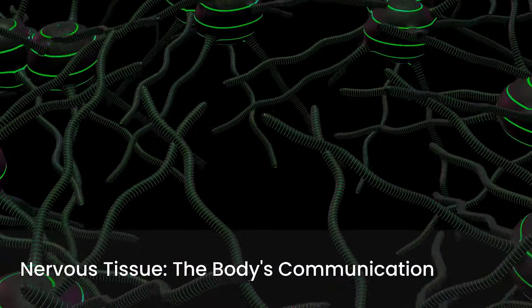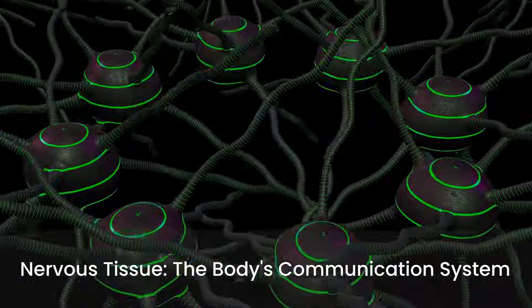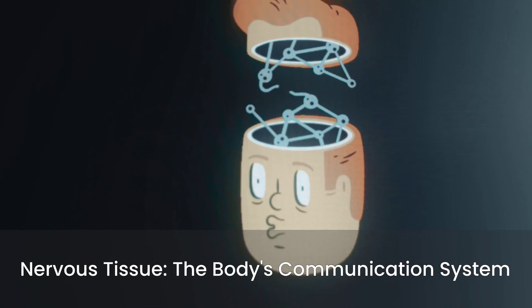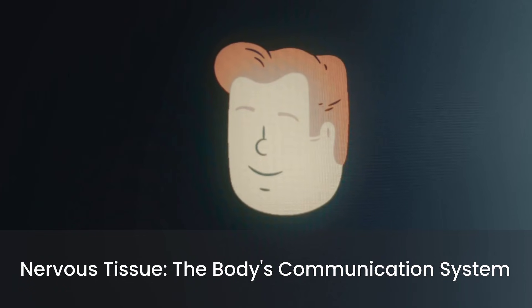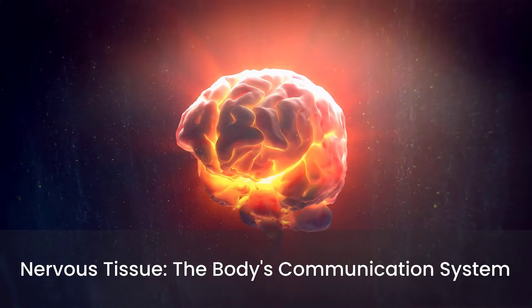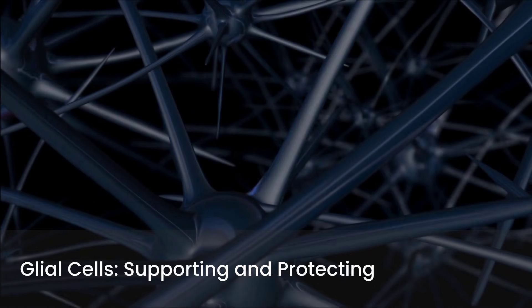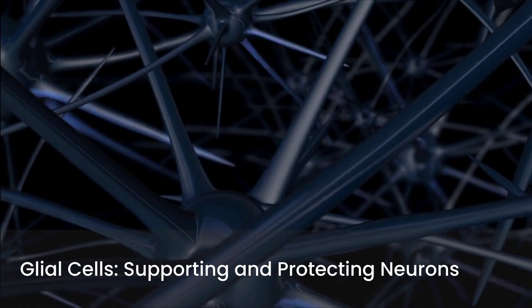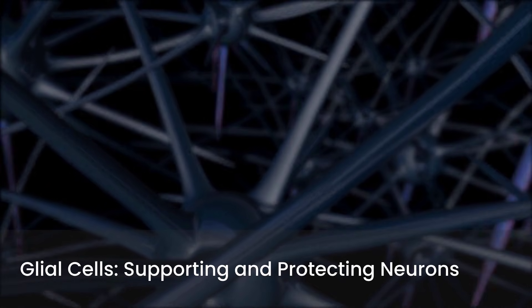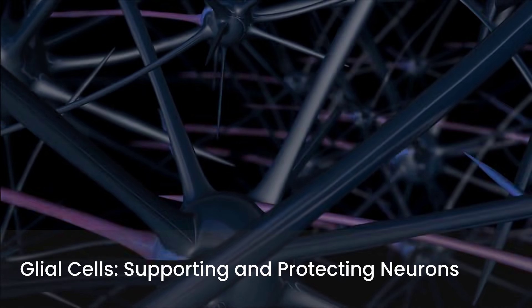Nervous tissue is the body's communication system, responsible for transmitting electrical signals throughout the body, allowing us to perceive, think, move, and regulate all bodily functions. The fundamental unit of the nervous system is the neuron. Neurons have a distinct structure, including a cell body containing the nucleus, dendrites that receive signals, and an axon that transmits signals away from the cell body. Supporting the neurons are glial cells — non-neuronal cells that maintain homeostasis, form myelin, and provide support and protection for neurons.